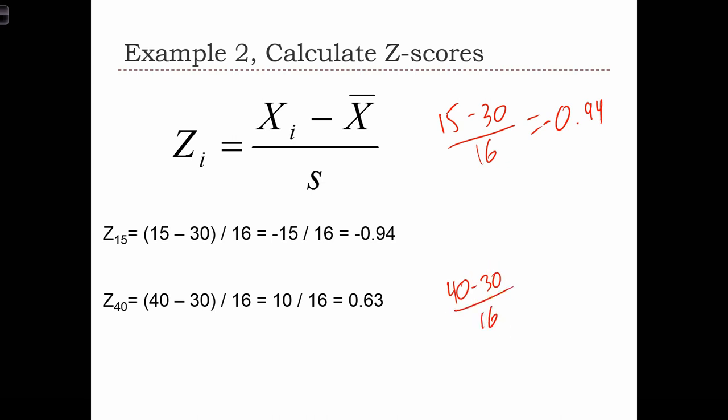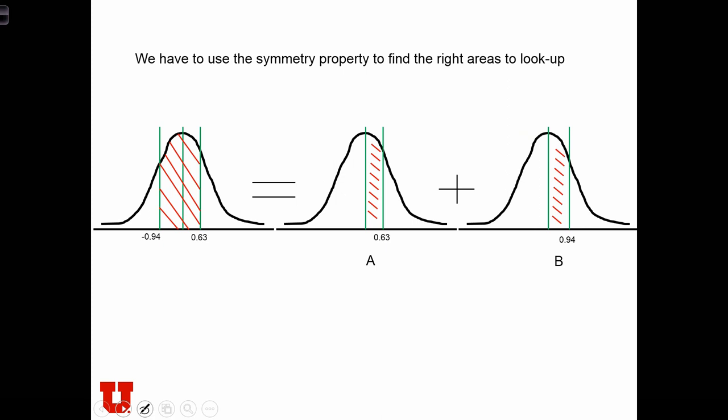But we have a negative z-score and our table doesn't have negative z-scores, so we need to use a trick to calculate the correct area. We're going to exploit the symmetry property of the normal curve to find the right areas to look up.